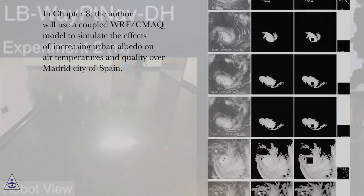In Chapter 8, the author will use a coupled WRF-CMAQ model to simulate the effects of increasing urban albedo on air temperatures and quality over Madrid city of Spain.